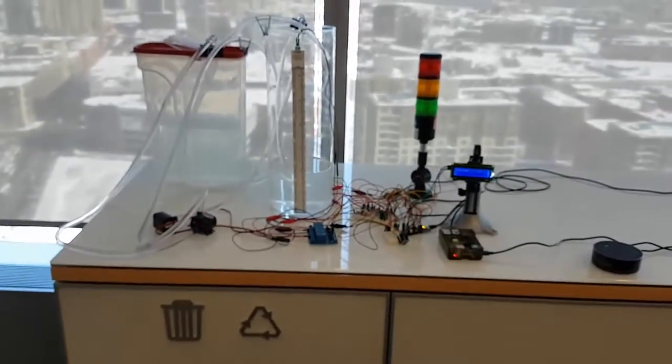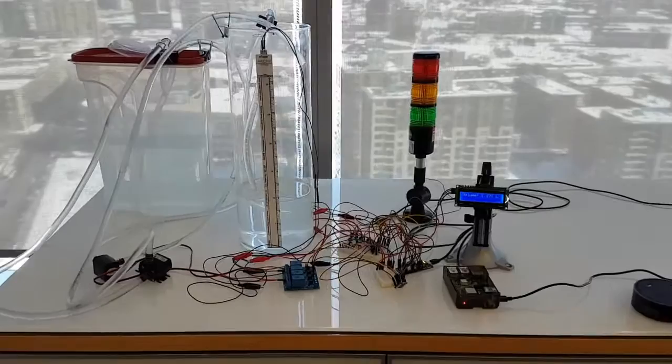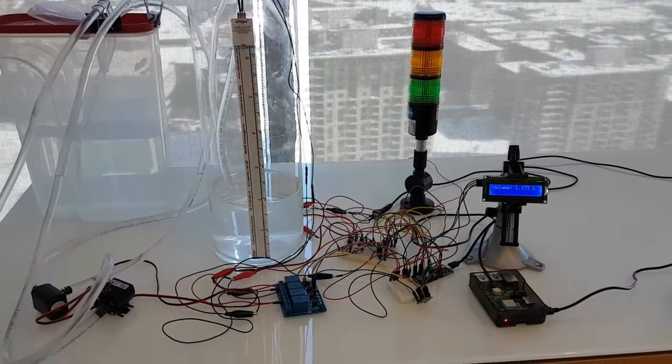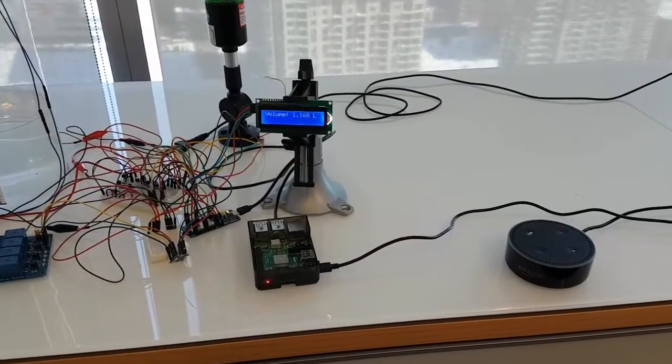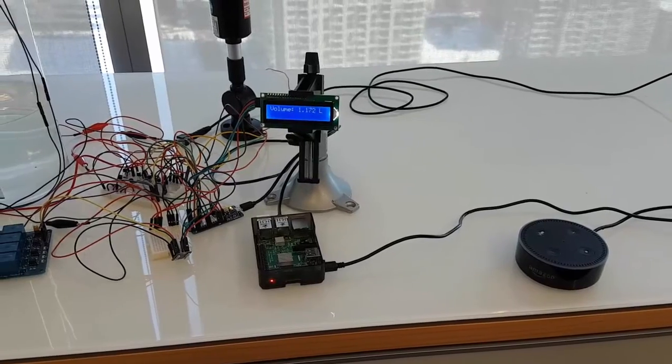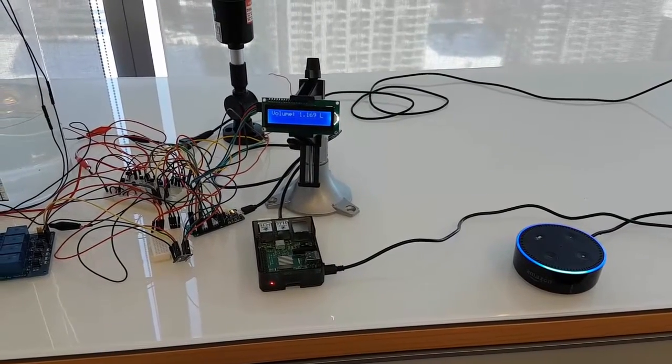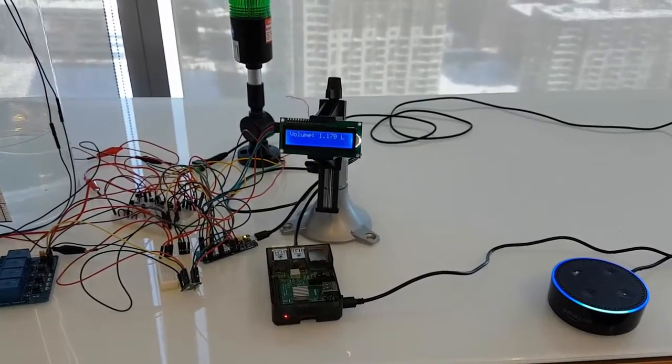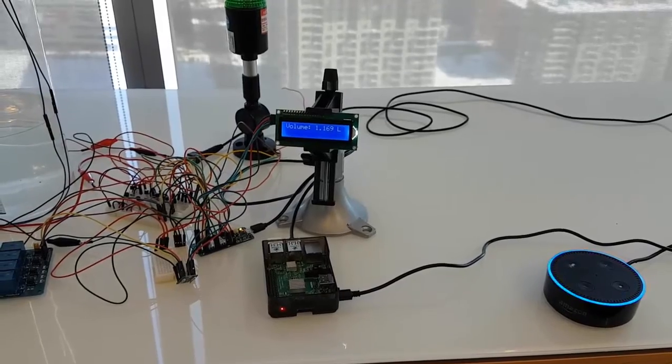So with this setup, we can do some very interesting things, and we're going to demonstrate some HMI capabilities now. For instance, we can very simply query the entire system by doing something as simple as: Alexa, ask RioControl, what's the liquid level? The liquid level is 1.168 liters.